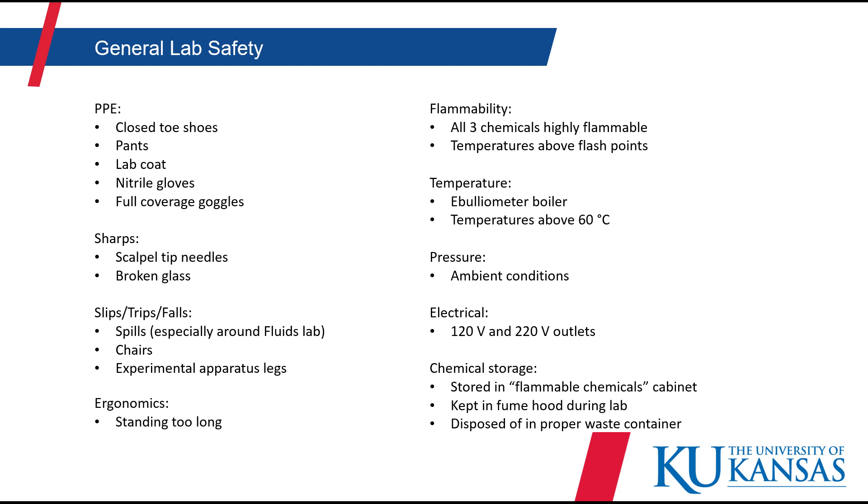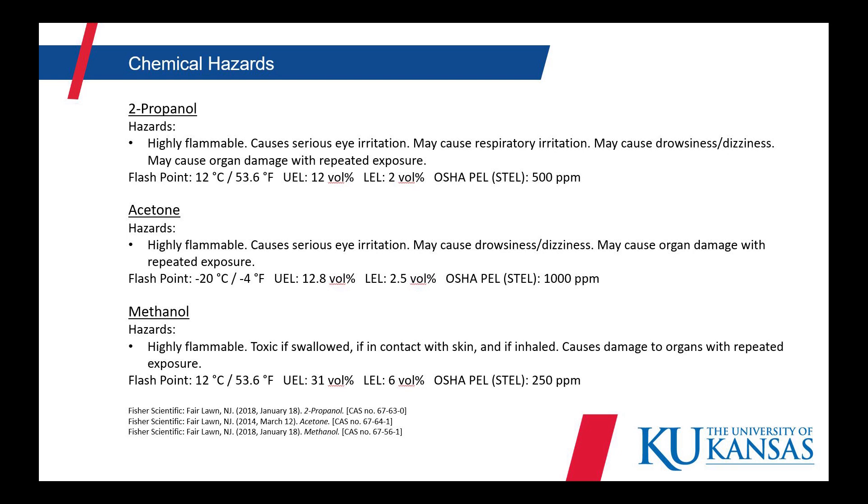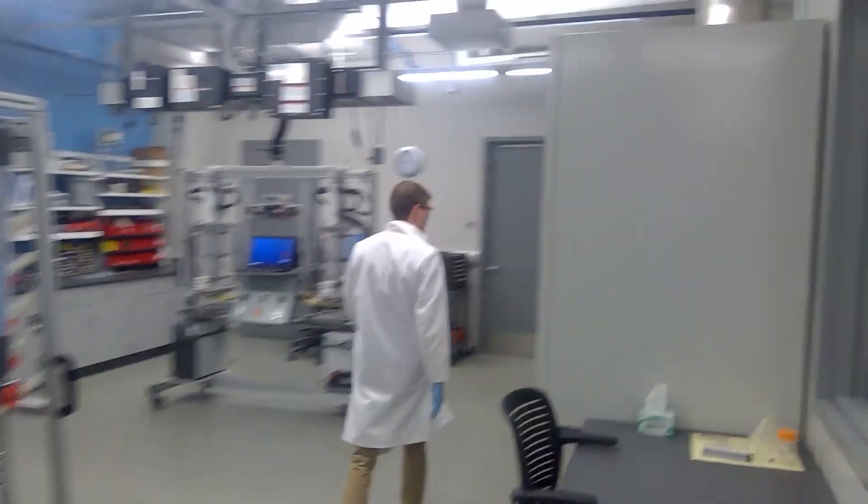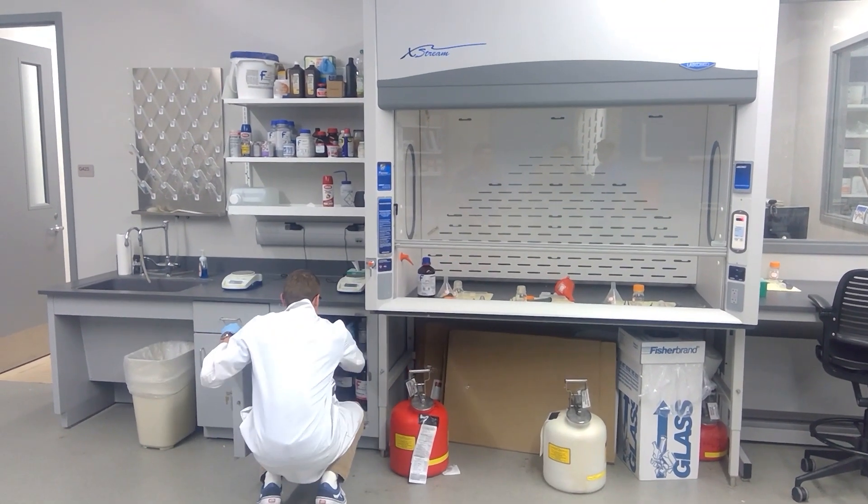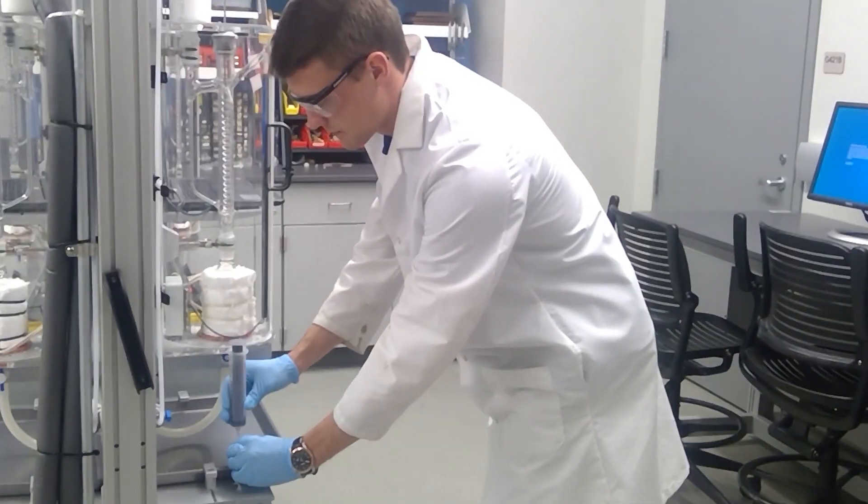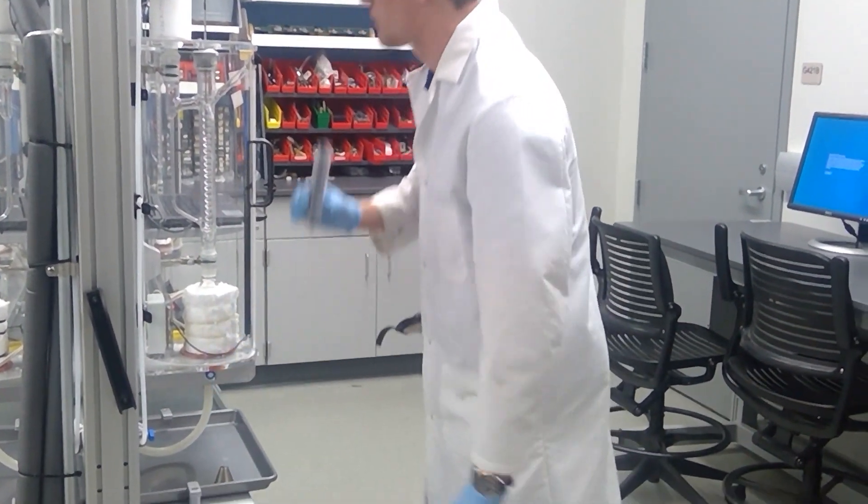Let's go over some general safety measures. When in the lab, it is important to pay attention to safety hazards in the following categories. The chemicals used in this lab are all highly flammable. Make sure to keep them in the fume hood during the lab. Be aware that temperatures above 60 degrees Celsius can cause serious burns to your skin. The syringes used have scalpel tip needles. Make sure to use the needle cap holder when removing the needle cap to avoid cutting yourself. Be aware of any tripping hazards and clean up spills immediately.